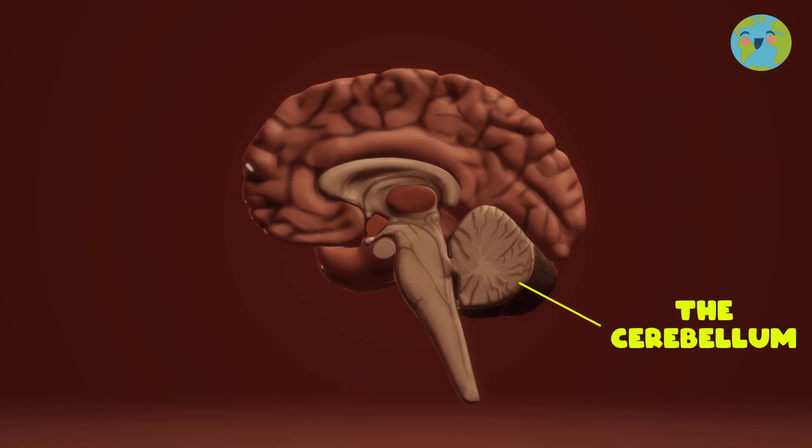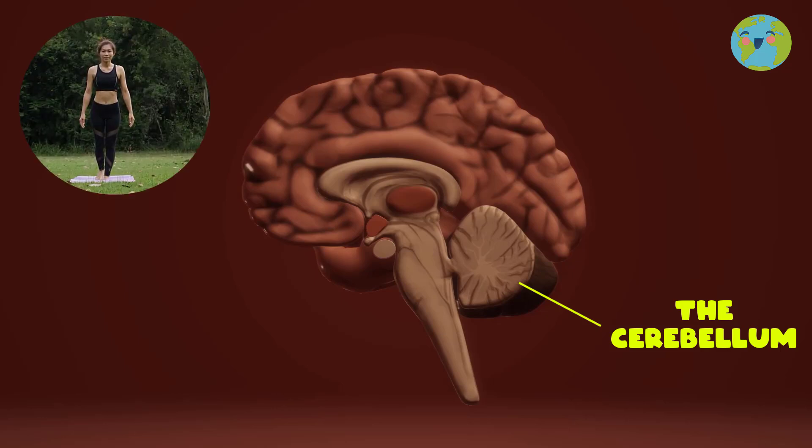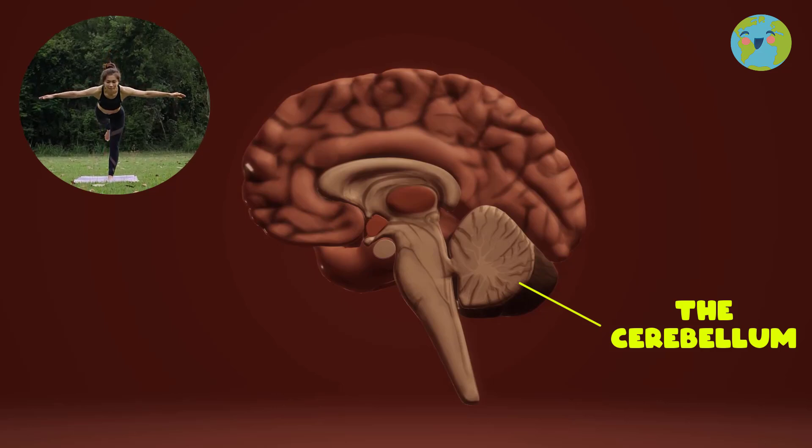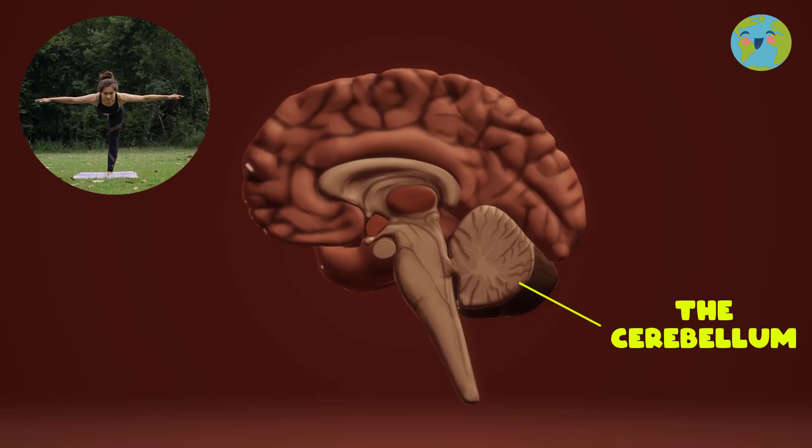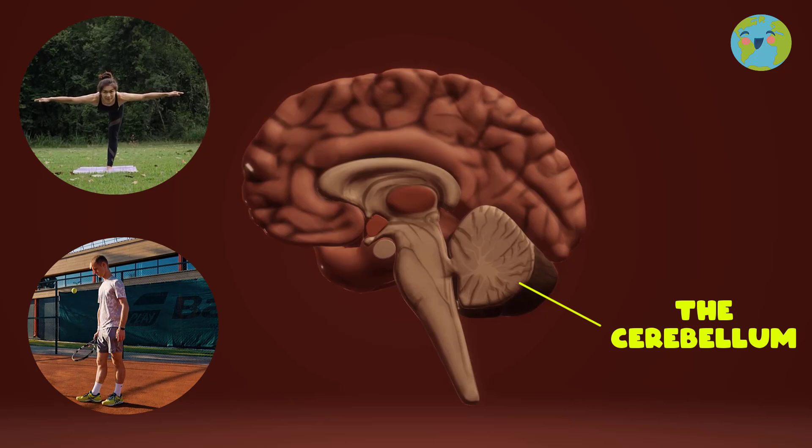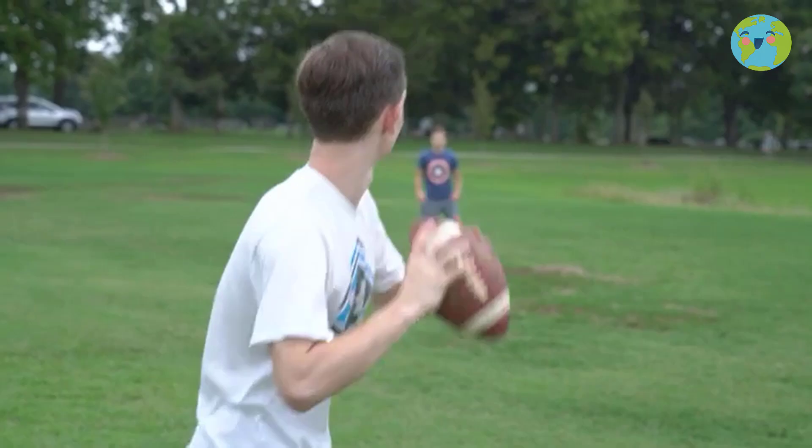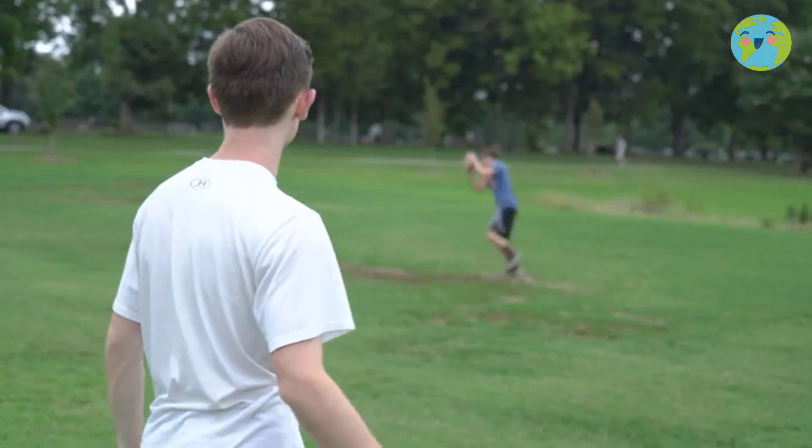The cerebellum is located in the back of the brain near the spinal column and is responsible for controlling balance so that we do not fall when we run or do pirouettes on the floor. It also controls coordination and all movements of our body. In this way, we can catch a ball when someone throws it towards us.